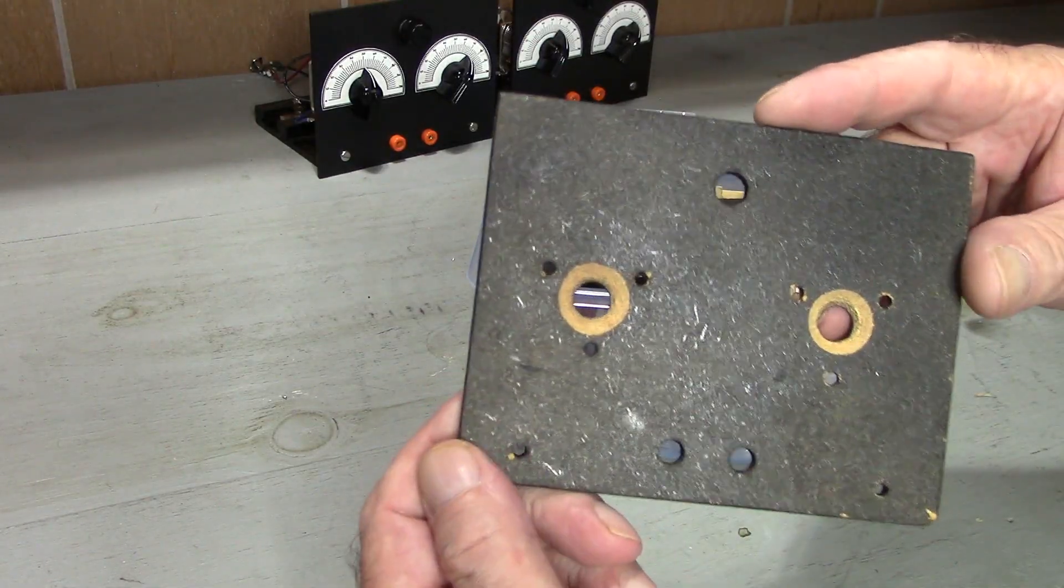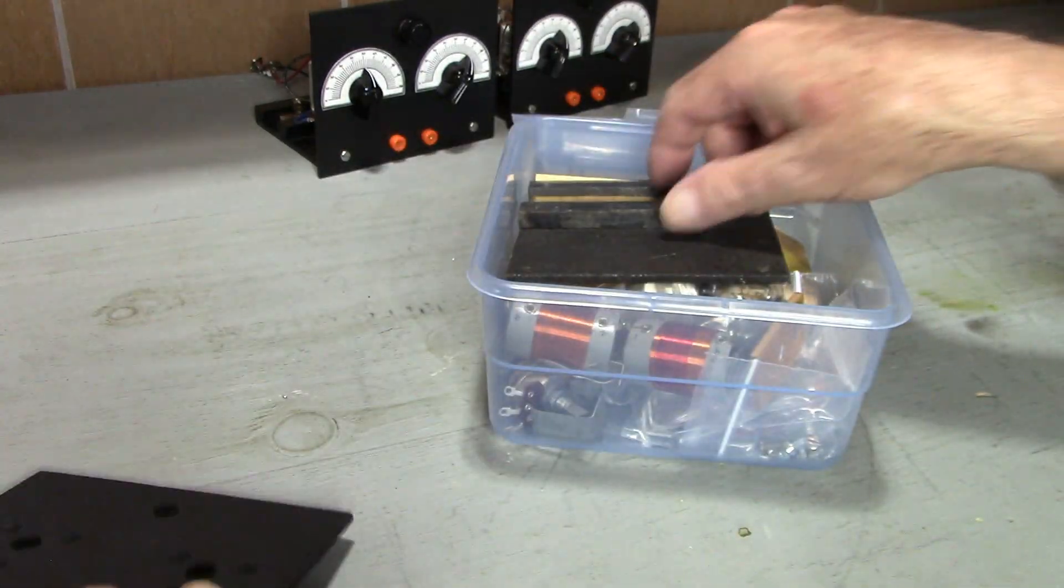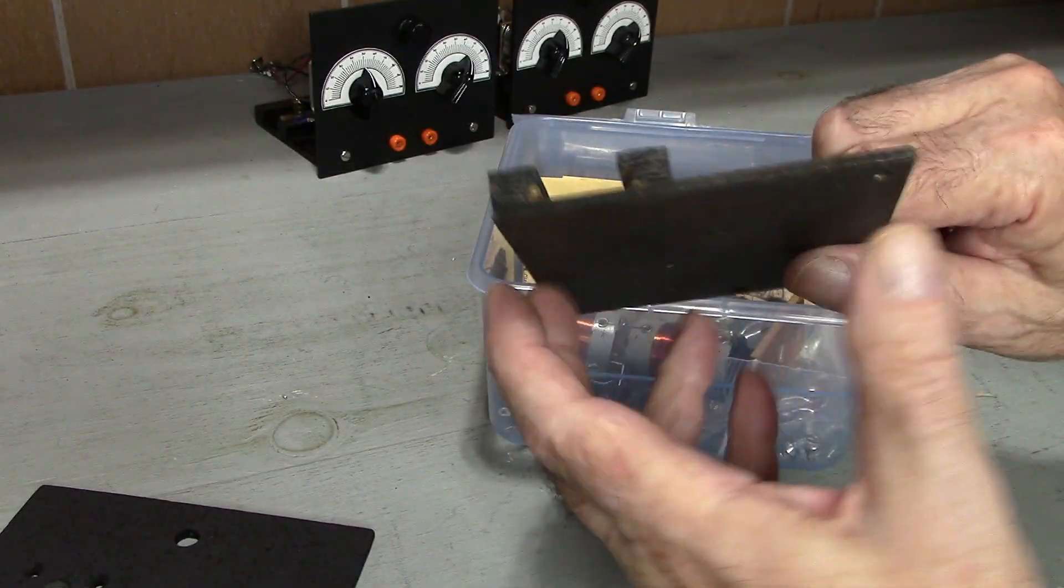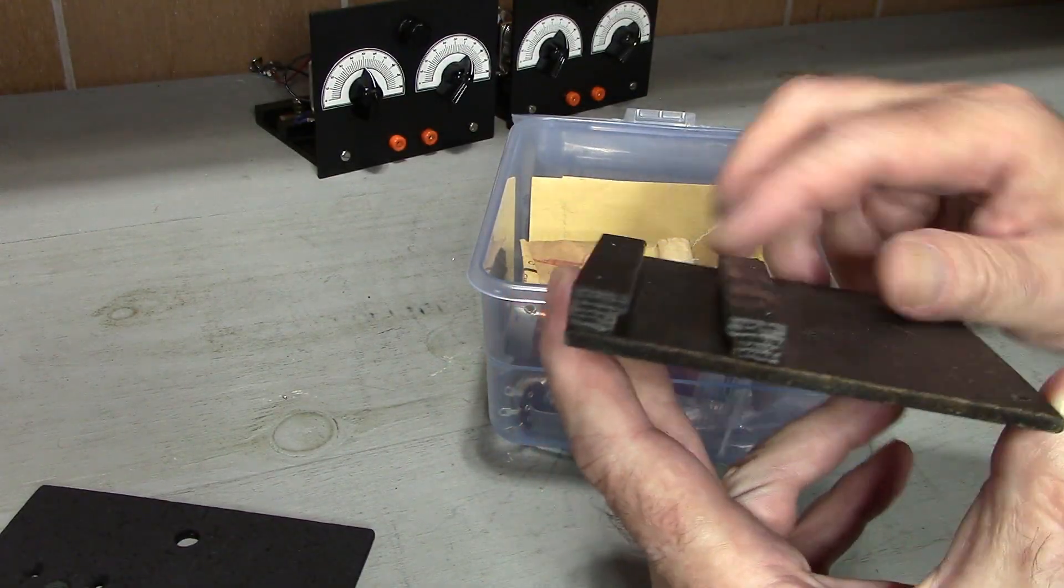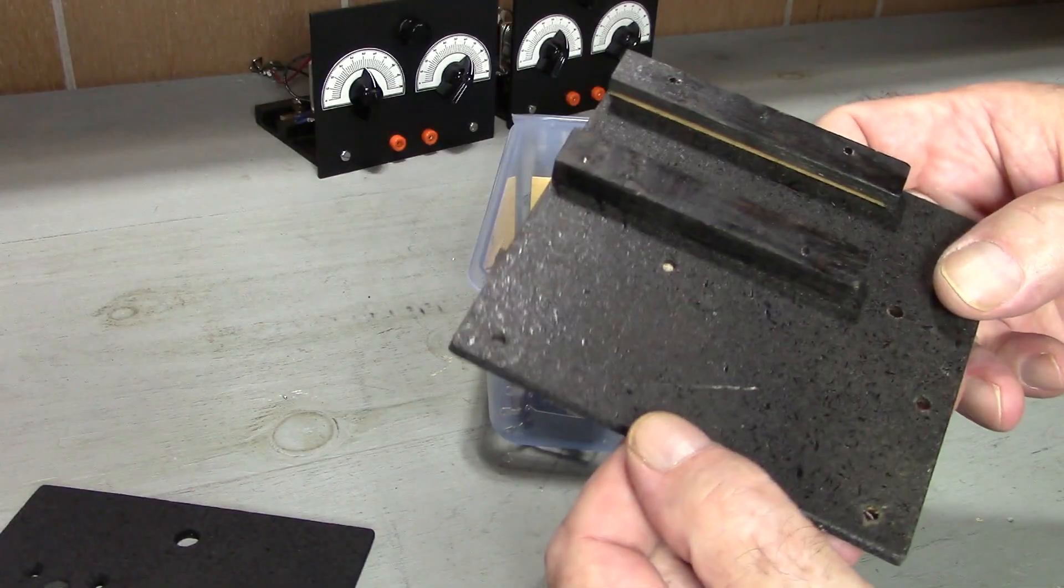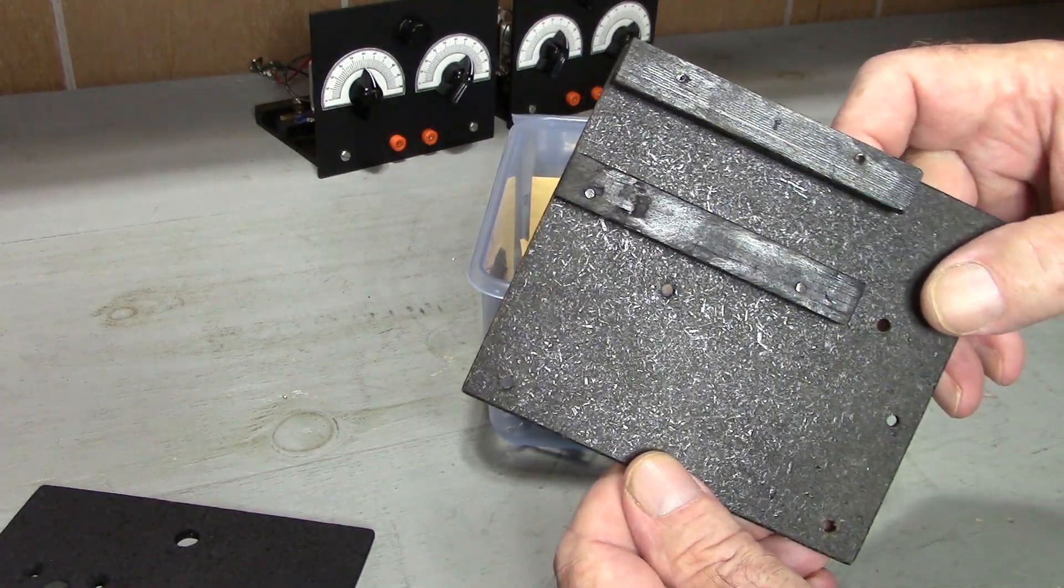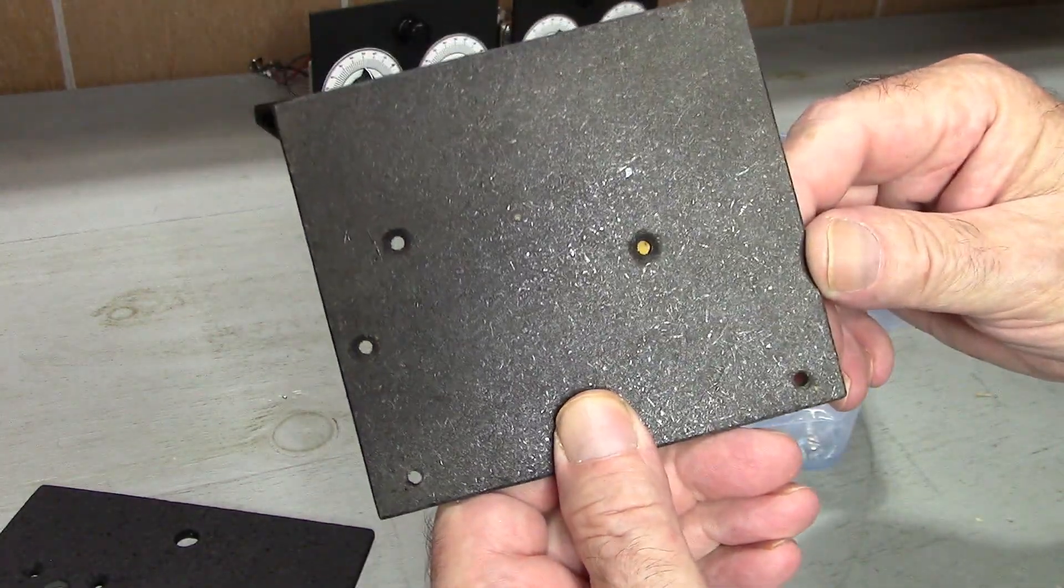Here's the front panel. It's countersunk on the back to allow for the variable capacitors. Now here's the base and the rails attached to the base. The rails are to allow the primary coil to slide back and forth.